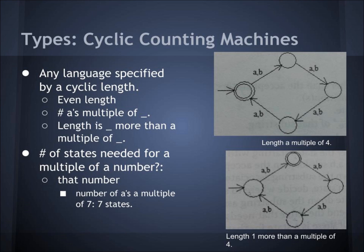To the right, we have a machine with length a multiple of 4, and on the bottom is length 1 more than a multiple of 4. Notice that the accept state is moved over 1.